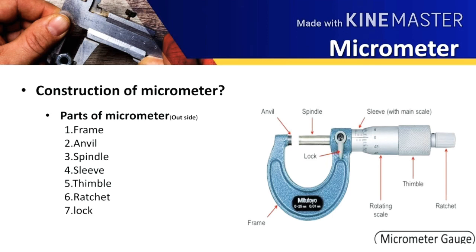It has an anvil at one end and the other end is hollow to allow the spindle. The sleeve is also attached to the hollow section of the frame and it has a horizontal scale which is known as the main scale.